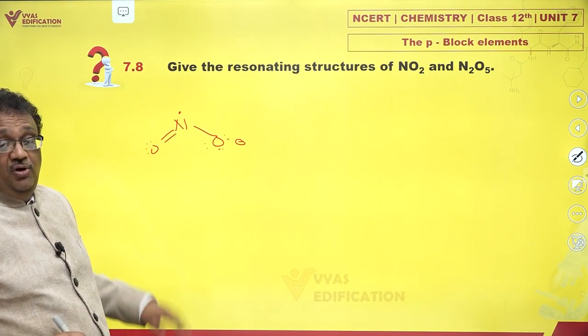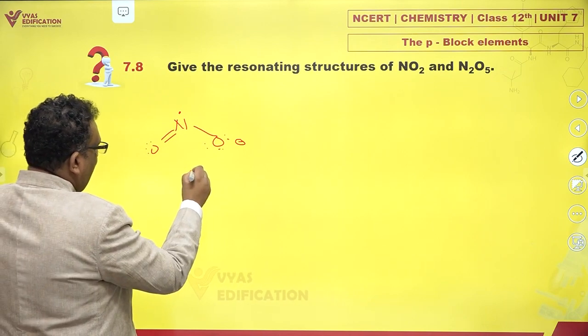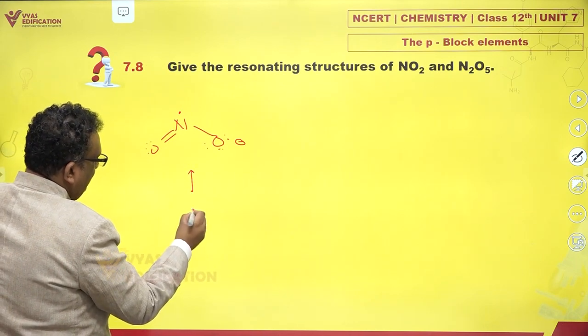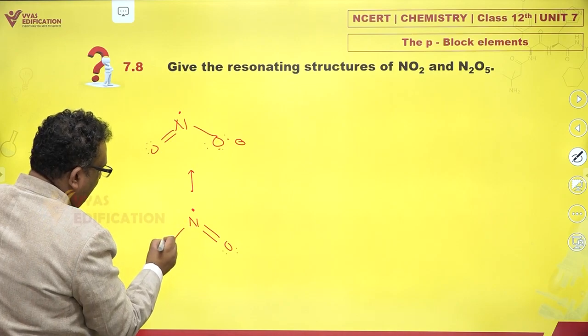There is an unpaired electron and this is something which we can't help. So nitrogen has an incomplete octet.